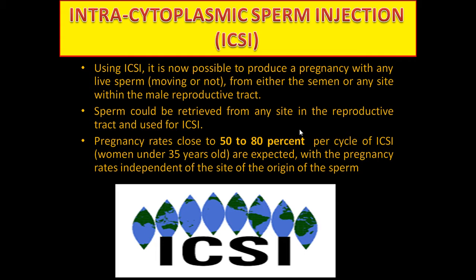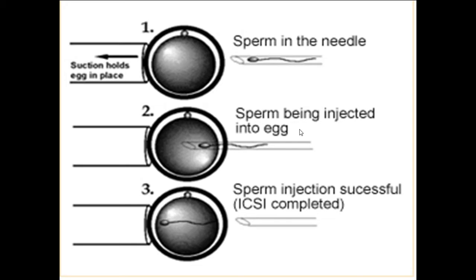This image shows ICSI: there is a holder, this is the ovum, this is the micropipette injector containing the sperm being injected directly into the cytoplasm of the ovum. This micromanipulation is successful.